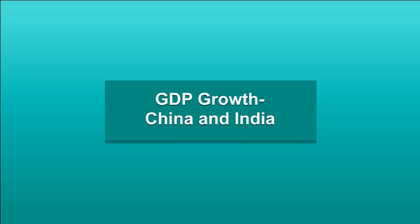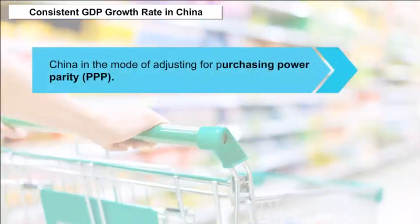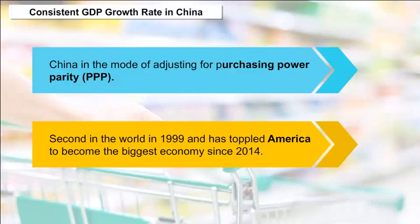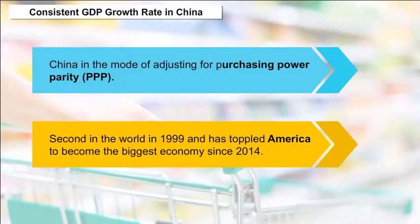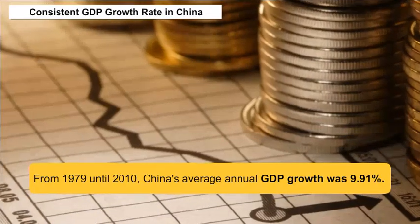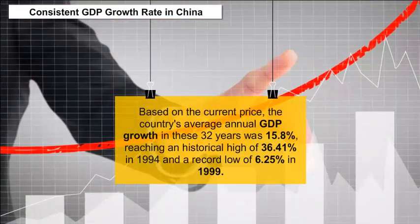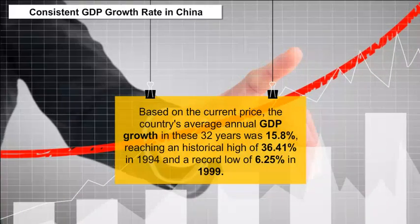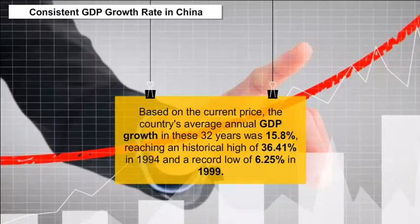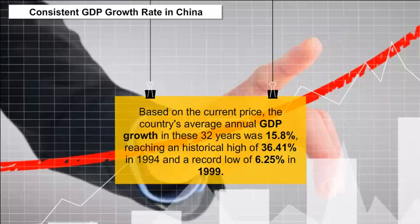GDP Growth — China and India: Consistent GDP growth rate in China — China, when adjusting for purchasing power parity (PPP), became second in the world in 1999, and has toppled America to become the biggest economy since 2014. From 1979 until 2010, China's average annual GDP growth was 9.91%. Based on current prices, the country's average annual GDP growth over 32 years was 15.8%, reaching a historical high of 36.41% in 1994 and a record low of 6.25% in 1999.